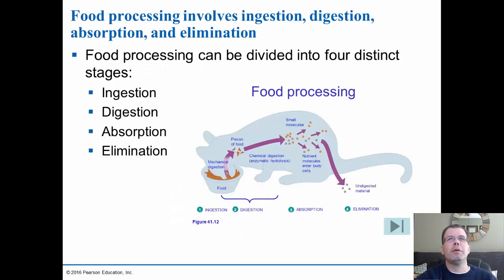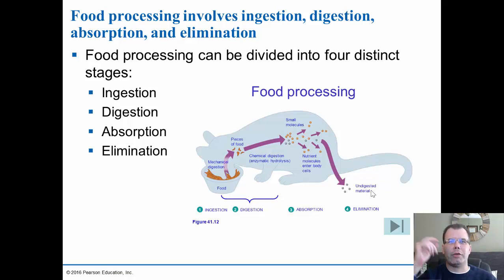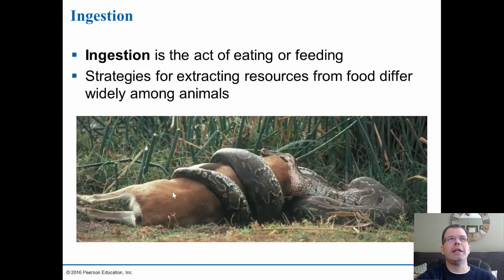Food processing can be divided into four stages: ingestion, which is taking in the food; digestion, which is the chemical breakdown using enzymatic hydrolysis; absorption in the intestines, which absorbs nutrients into the rest of the body; and finally elimination, which gets rid of excess waste or undigested material. These four stages — ingestion, digestion, absorption, and elimination — explain why we eat the food we eat.